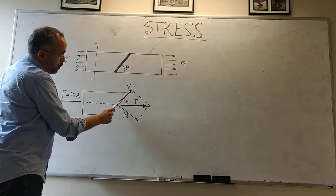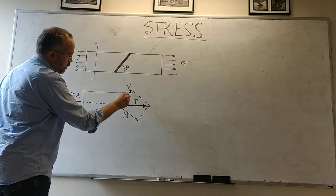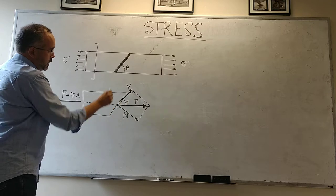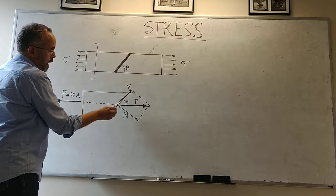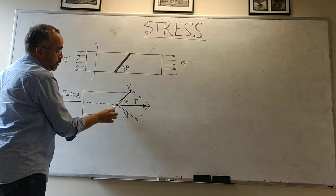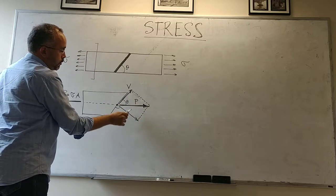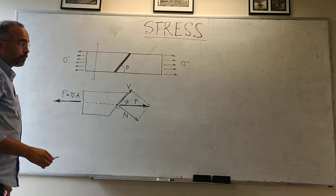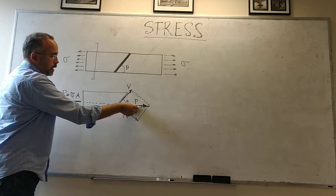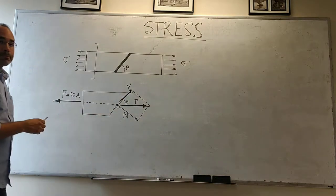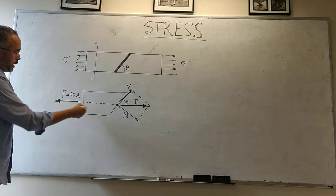One is N, which is perpendicular to the inclined surface, and one is V, which is parallel to that surface. If you compute the resultant of these two, you have to obtain P going that way to oppose P going this way.